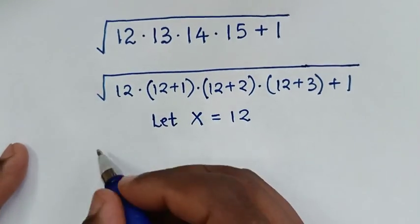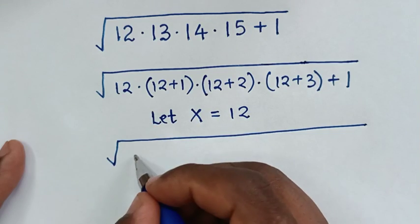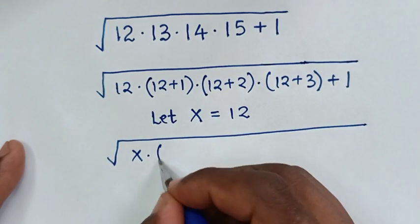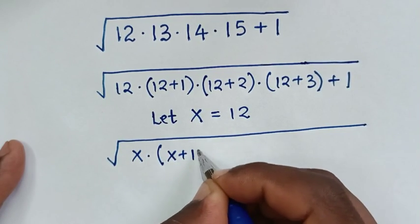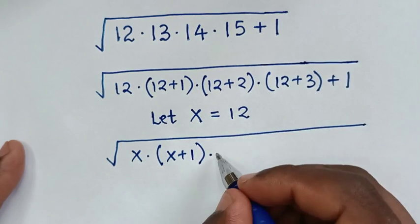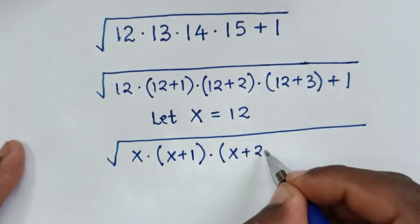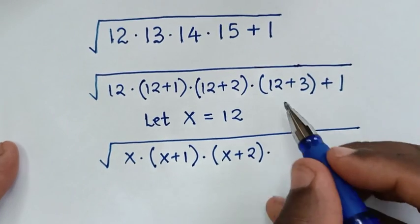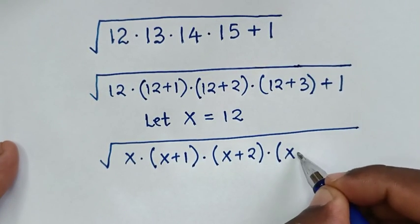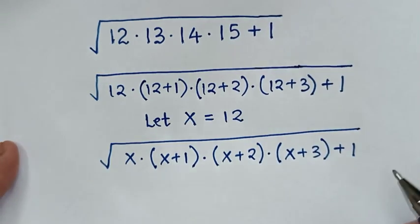Then our expression will be the square root of x times (x plus 1) times (x plus 2) times (x plus 3), then plus 1.